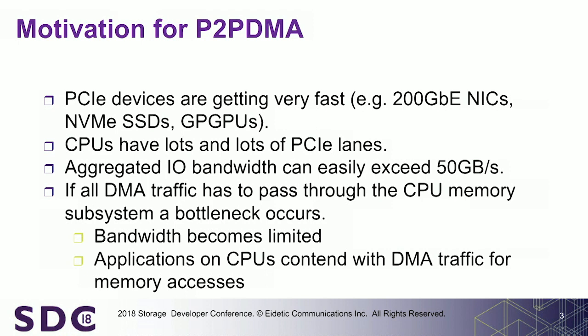One of the motivations for this is that PCIe devices are getting really, really fast. Mellanox and Broadcom have both announced 200 gigabit NICs — PAM4 at 56 gigabits per second, 28 megabaud. We have NVMe SSDs that can easily push a million 4K IOPs or more. We have GPGPUs that can easily hit the limits of 16 lanes of Gen 3. With Gen 4 coming, we're about to see a doubling of PCIe bandwidth.